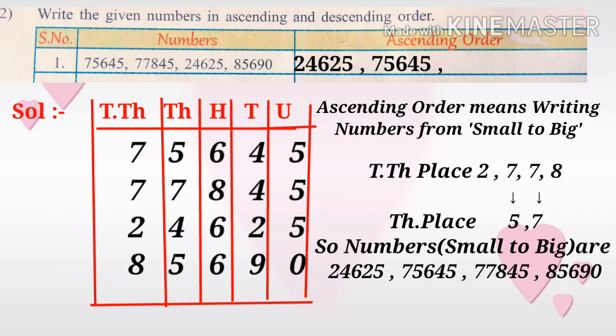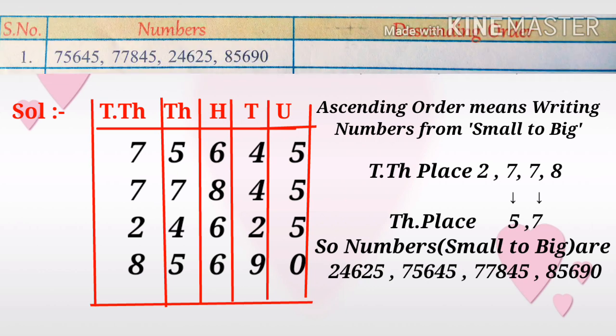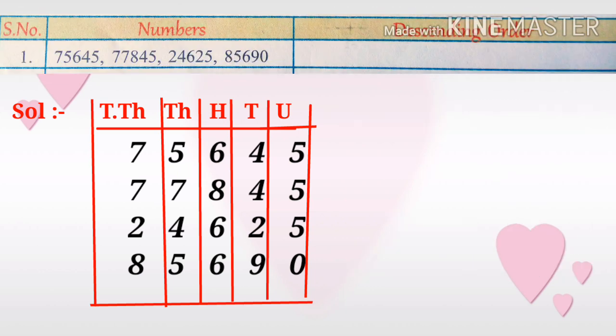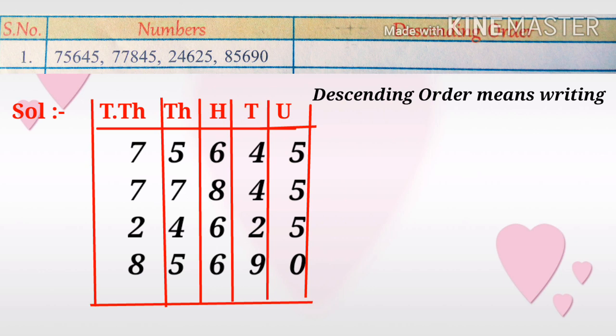The second number in ascending order is seventy-five thousand six hundred forty-five, the third is seventy-seven thousand eight hundred forty-five, and the last number is eighty-five thousand six hundred ninety. Descending order means writing numbers from big to small.